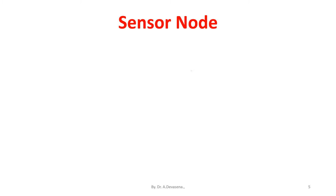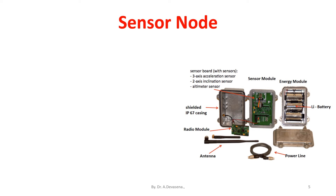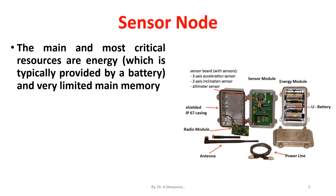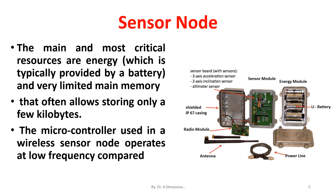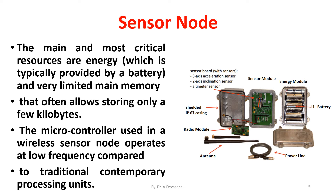The main and most critical resources are energy and very limited main memory, which often allows storing only a few kilobytes. The microcontroller used in a wireless sensor node operates at low frequency compared to traditional contemporary processing units.